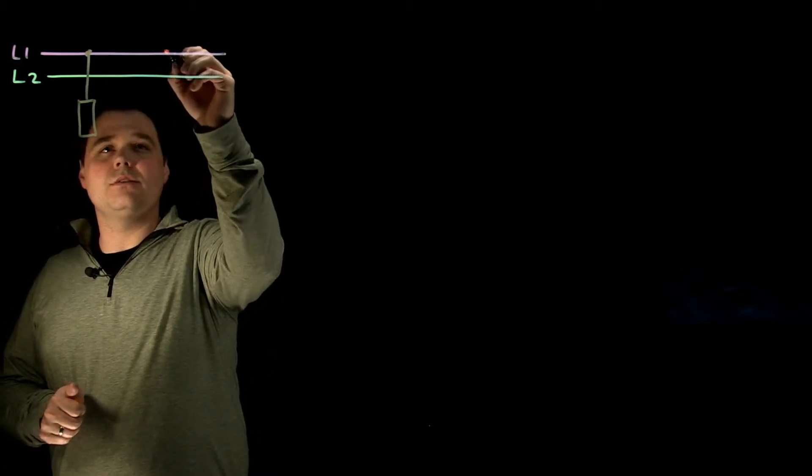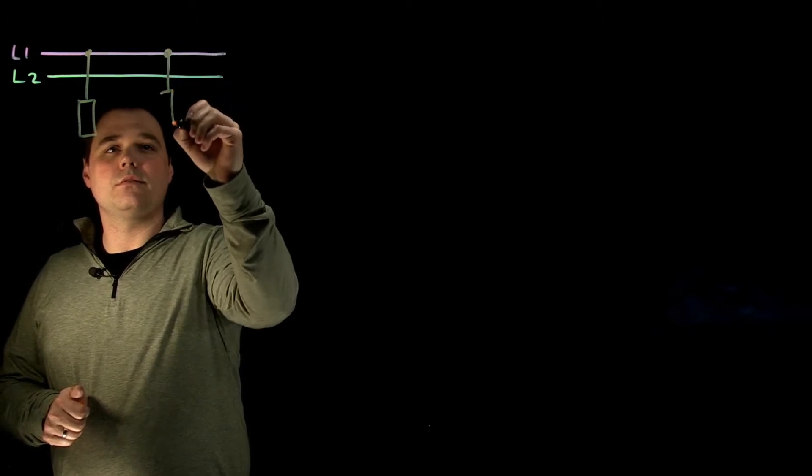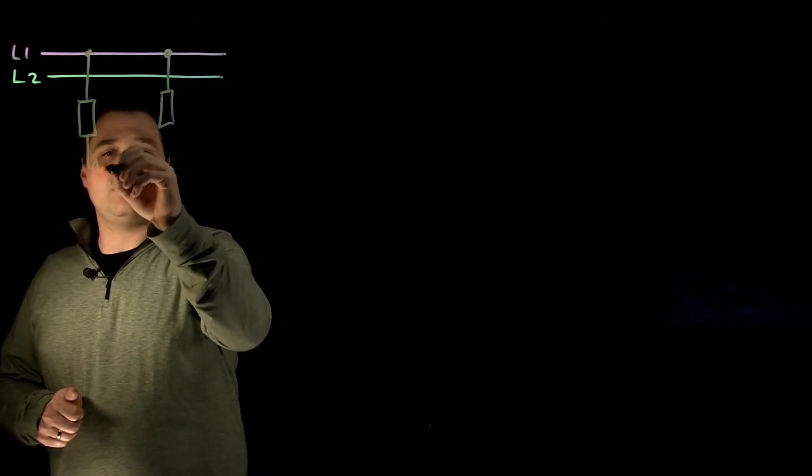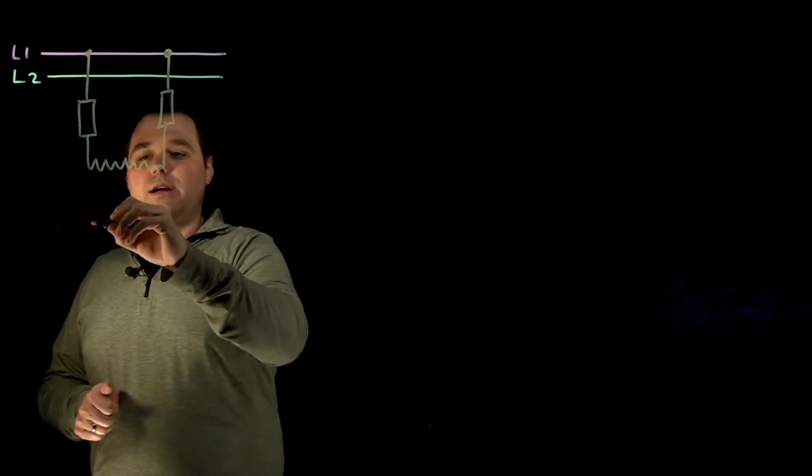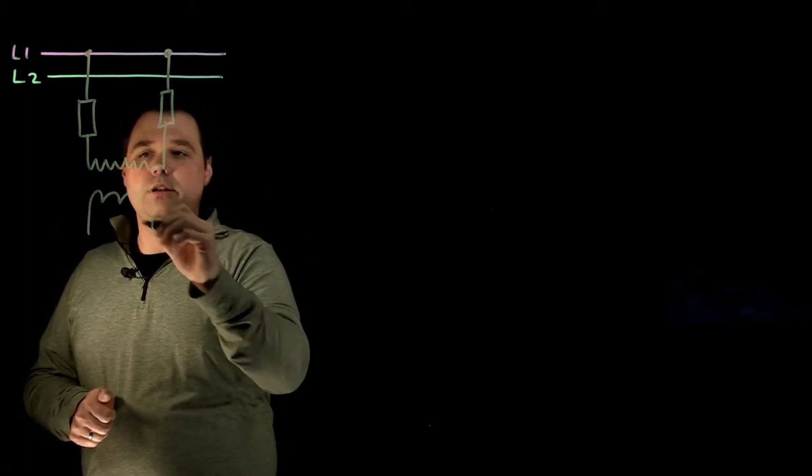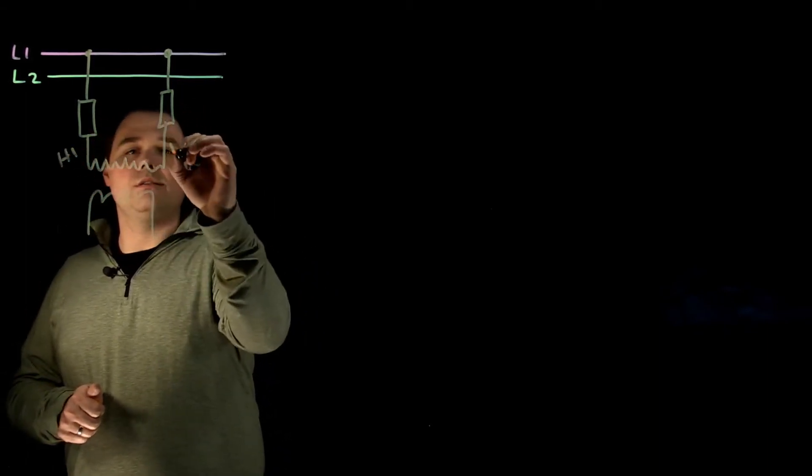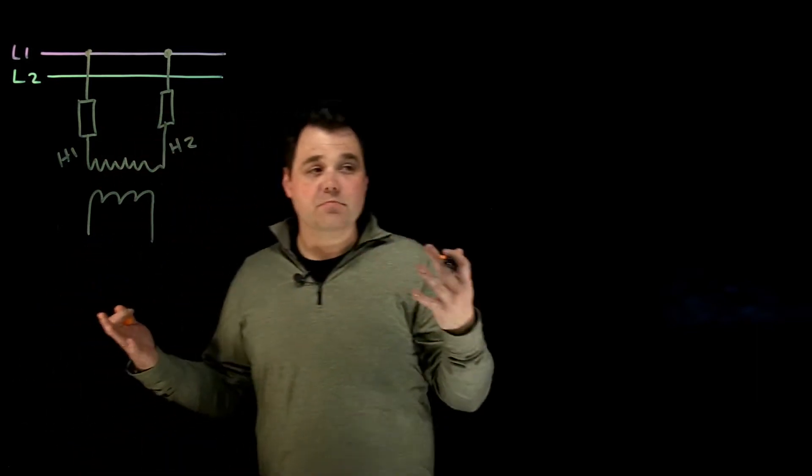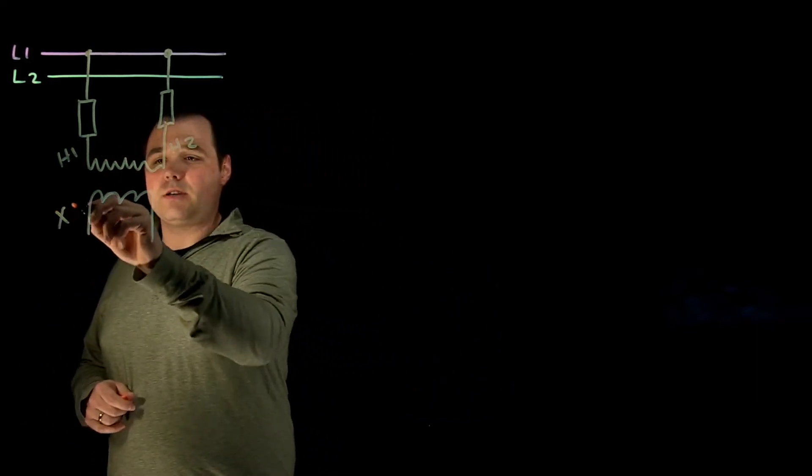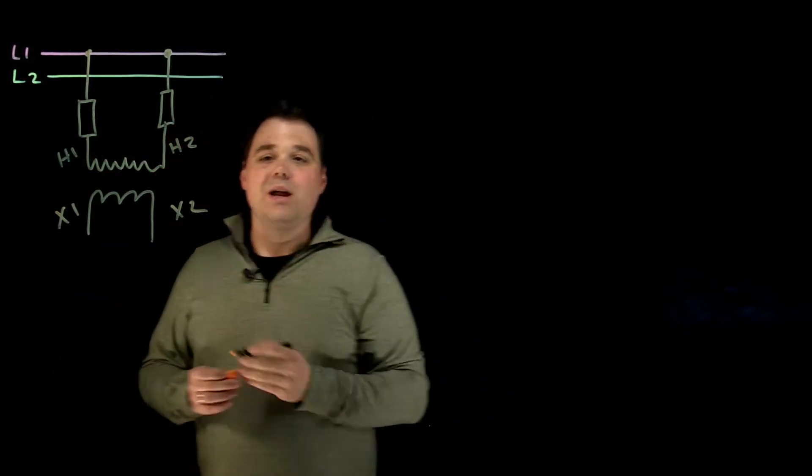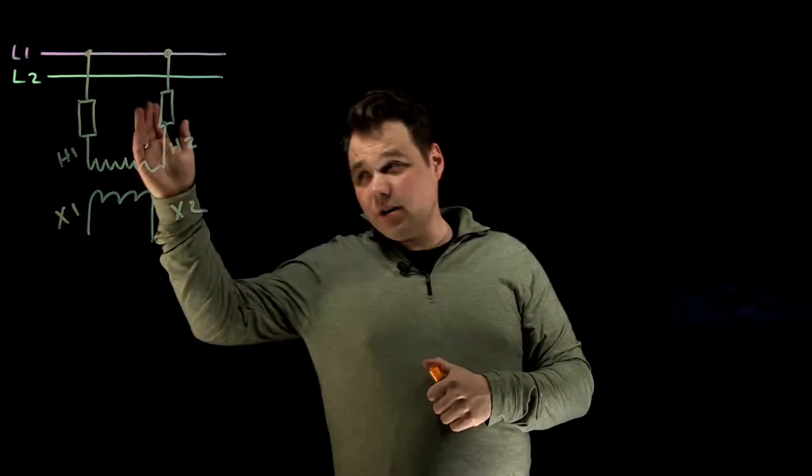Usually they're fused. Of course we would have a high side and a low side. This would be H1, H2. On the low side, we have X1, X2. They're always in that subtractive polarity.